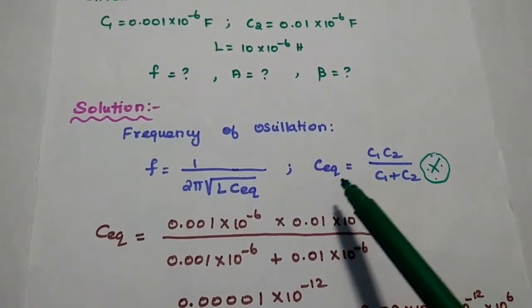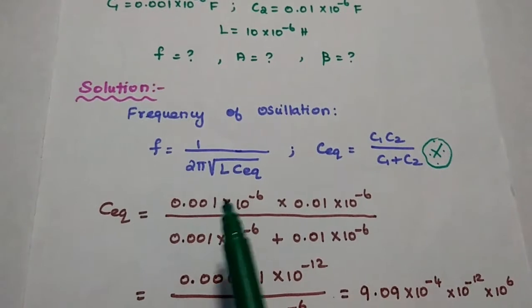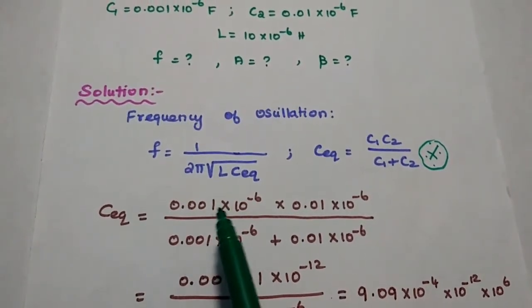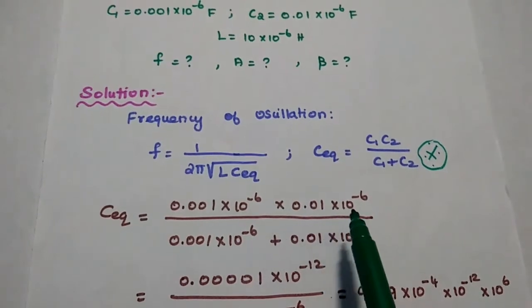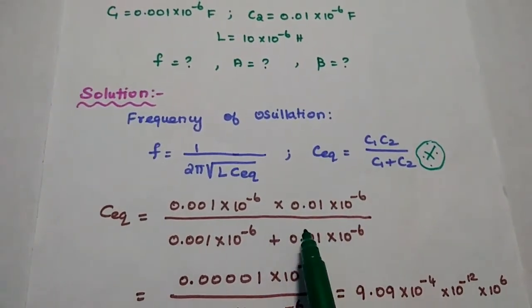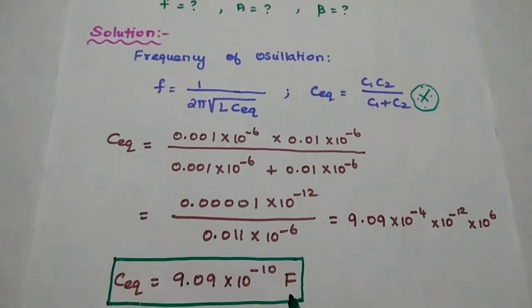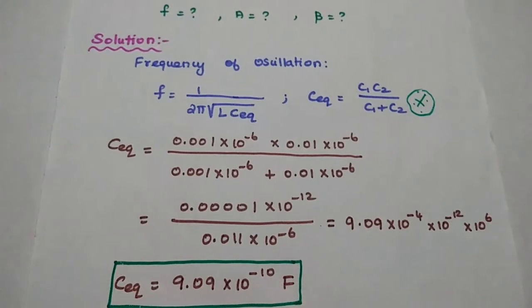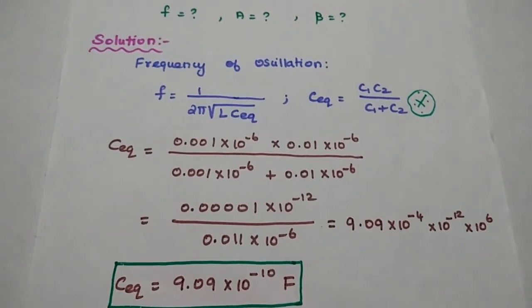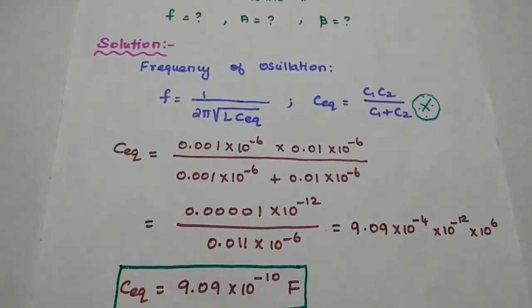First we are going to find out the C_equivalent value: C_equivalent = (0.001 × 10⁻⁶ × 0.01 × 10⁻⁶) / (C1 + C2). We get the answer as C_equivalent = 9.09 × 10⁻¹⁰ farad. So we have obtained the equivalent capacitance value.